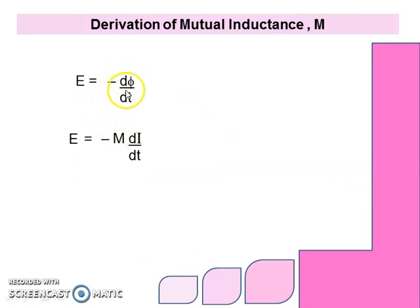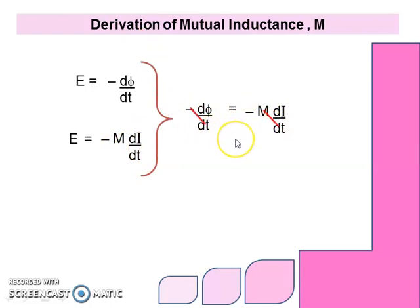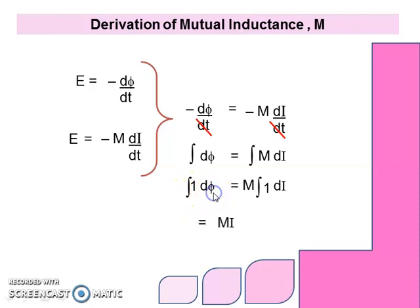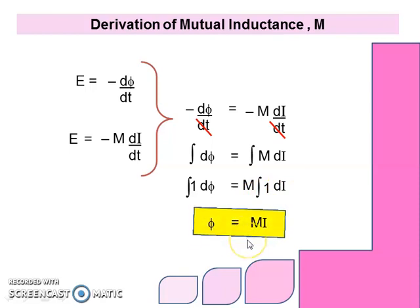From the two equations E = −dψ/dt and E = −M di/dt, we equate them and cancel dt on both sides, leaving dψ = M di. We now have separate variables ψ and i, so we take the integral on both sides. Since M is a constant, we bring it to the front. Integrating gives ψ = Mi. This is the first formula for mutual inductance M — the relationship between magnetic flux and current.